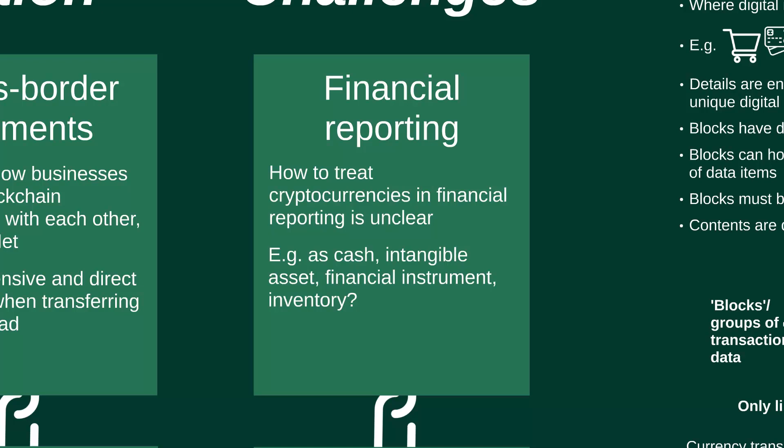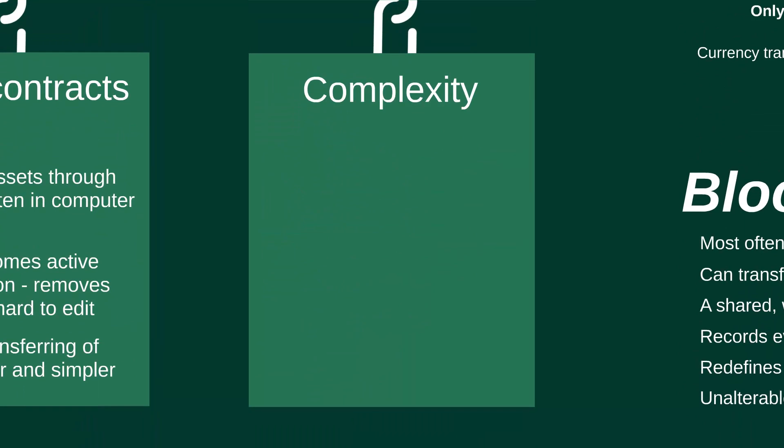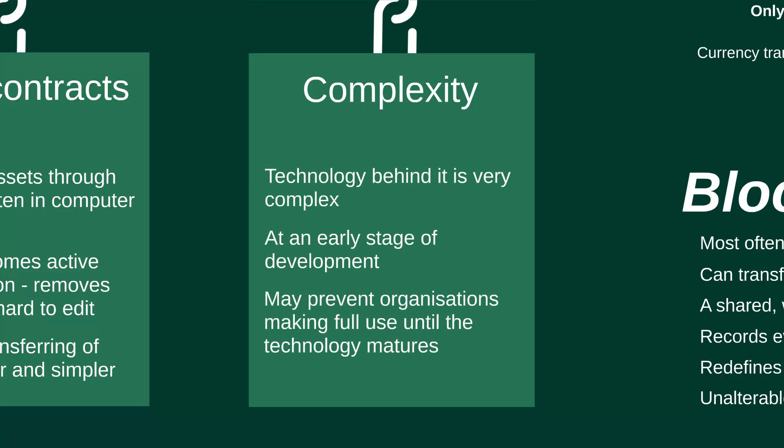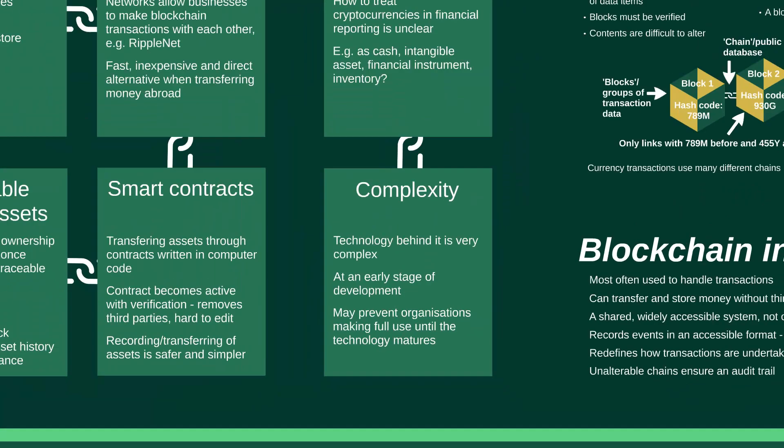The next challenge is complexity. Bitcoin's underlying technology is complex, and while there is significant potential for blockchain in finance to secure transactions and undertake accounting, it is in a very early stage of development. The complexity of the technology could prevent many organizations from making full use of blockchain until it matures further — it's simply too complex for some businesses and still at a relatively early stage of development.